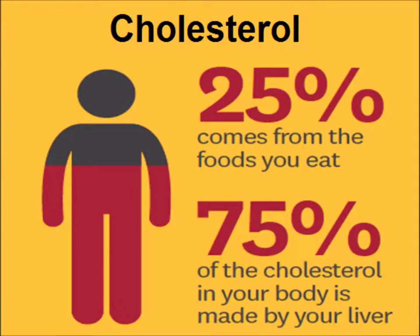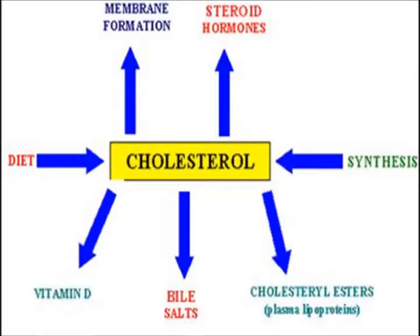As you know, 25% comes from the foods you eat and 75% of the cholesterol in your body is made by your liver. Membrane formation is synthesized from cholesterol. Steroid hormones are made from cholesterol, vitamin D is cholesterol-derived, bile salts and cholesterol esters, and plasma lipoproteins are synthesized in the liver.